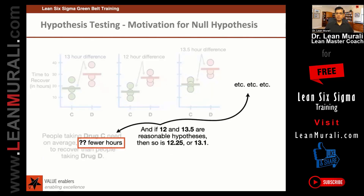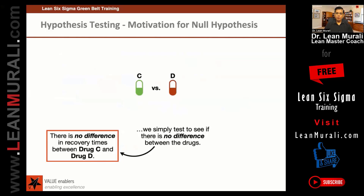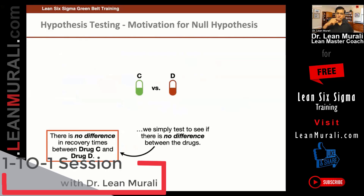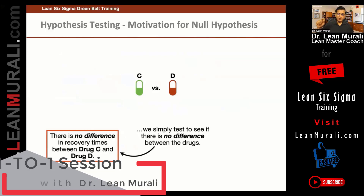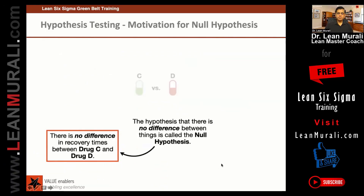It could have been any one of these that we had spoken about. Now since the goal is to see if drug C is different from drug D, we simply test to see if there is no difference. Later on we are going to call something like mu1 minus mu2 equals 0, or mu1 equals mu2. And the alternative can be mu1 not equal to mu2.